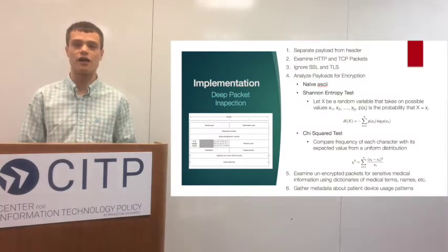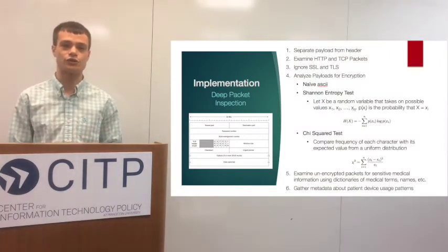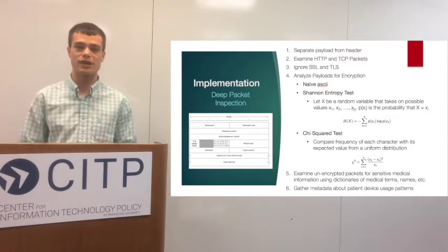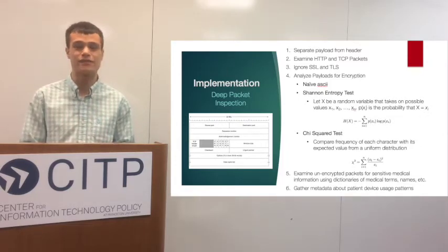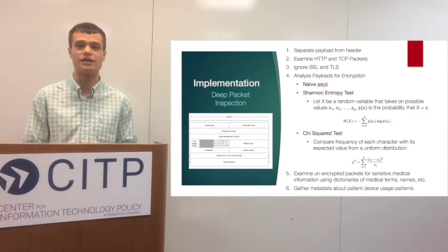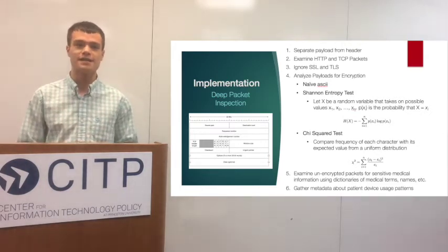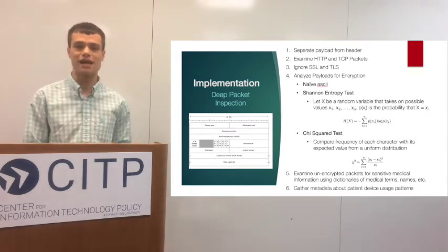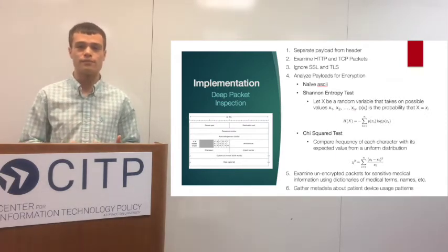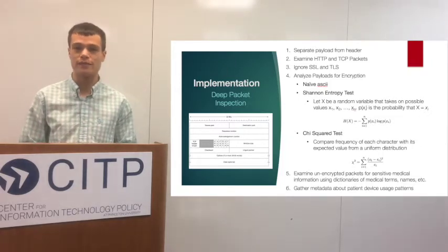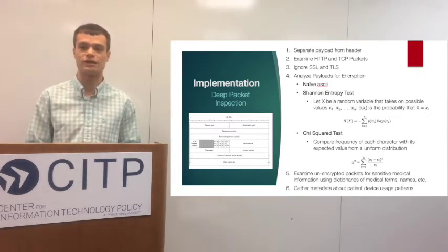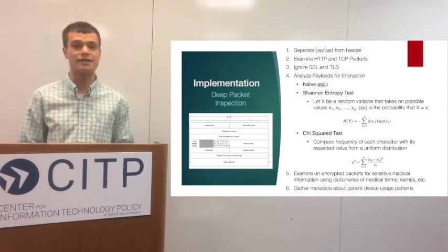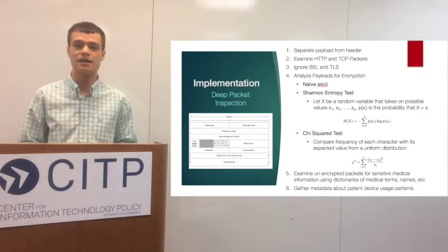The third feature of the IoT Network Monitor is a privacy feature which scans transmitted packets for potentially sensitive information that may be leaked from IoT devices in the home network. This is done by classifying packets as either encrypted or non-encrypted and then analyzing the unencrypted packets for potentially sensitive medical information, first names, or personal identifiable information. If a packet is found to be sending sensitive information, it is sent to the user interface to display to the user.